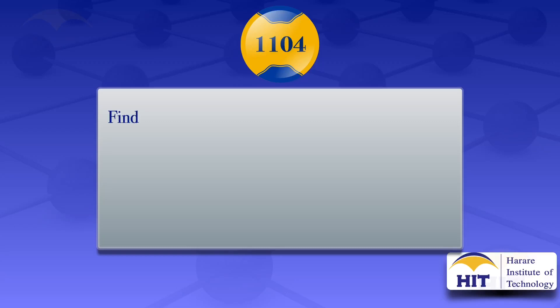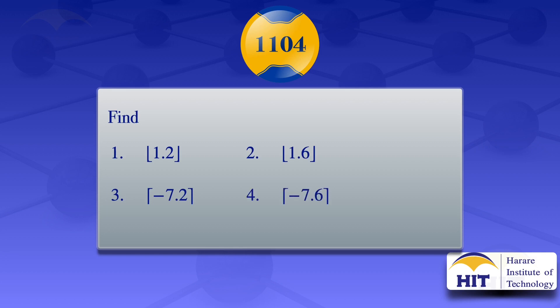In this tutorial, I'm going to find: number one, the floor value of 1.2; number two, the floor value of 1.6; number three, the ceiling value of minus 7.2; and number four, the ceiling value of minus 7.6.